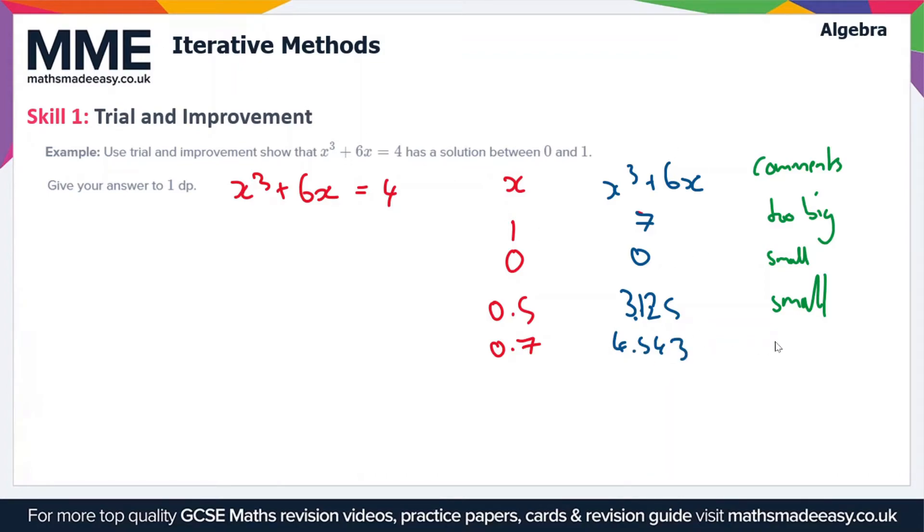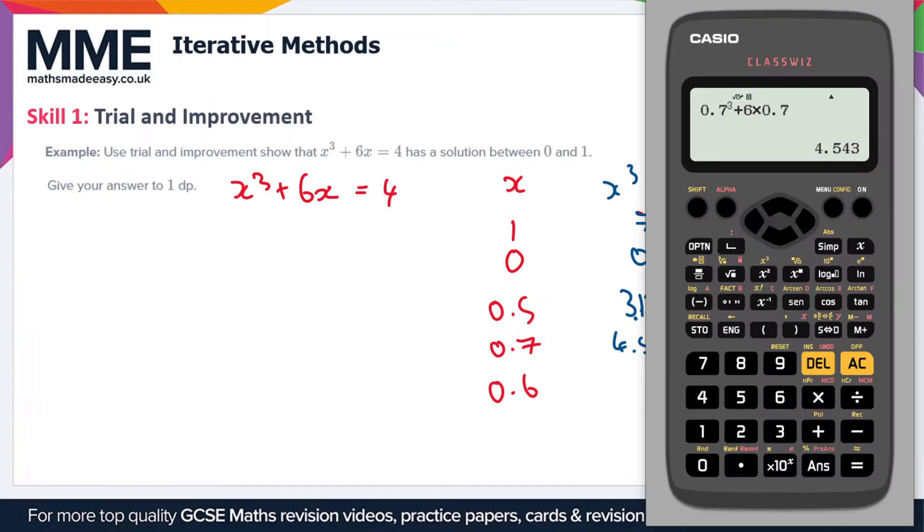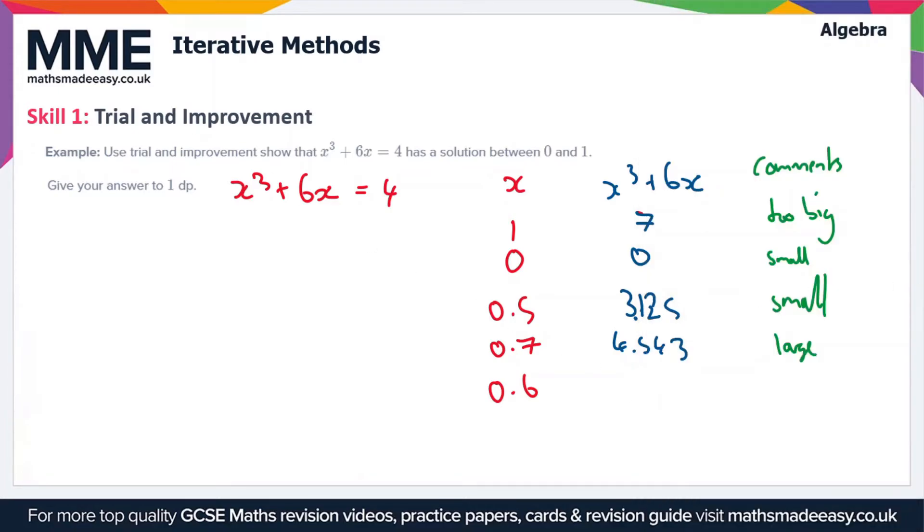So next we'll try a value of 0.6. So we're getting closer and closer each time. So we've got 0.6³ + 6 times 0.6, that's going to give us 3.816, so 3.816, and that is too small.